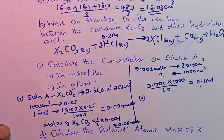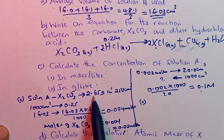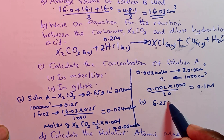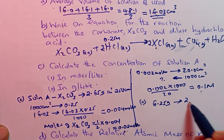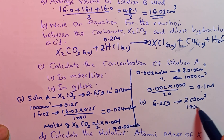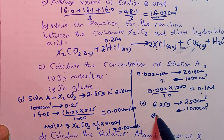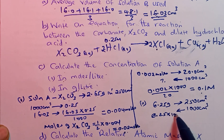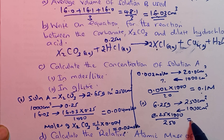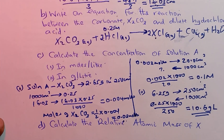For part C Roman numeral ii, calculate the concentration in grams per liter. We know 6.25 grams were dissolved in 250 cm³. Since 1 liter equals 1000 cm³, we cross-multiply: (6.25 × 1000) ÷ 250 = 25.0 grams per liter.